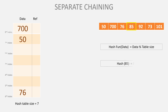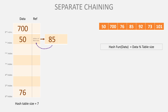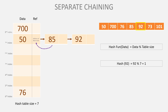85 mod 7 gives index 1. But index 1 already has 50 — so we have a collision. To handle it, we go to 50's reference part and add the address of 85. So 50's reference now points to 85, and 85's reference is null. Next, 92 mod 7 also gives index 1. We go to index 1, find 50 already there, check 50's reference — it points to 85. We check 85's reference — it is null. So we add 92 there: 85's reference now holds the address of 92.